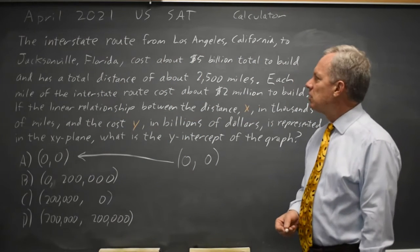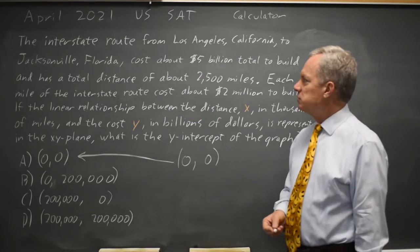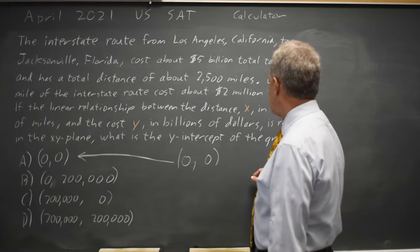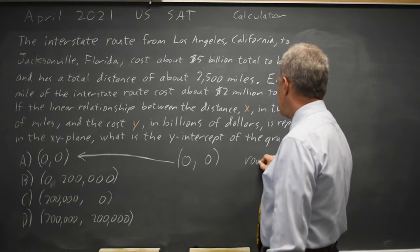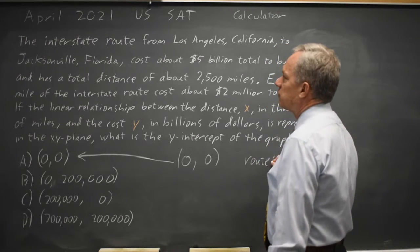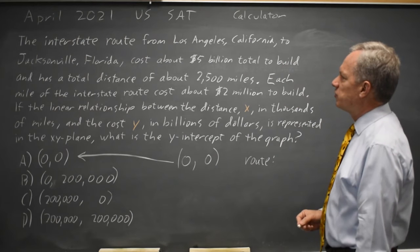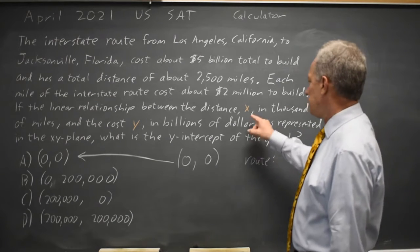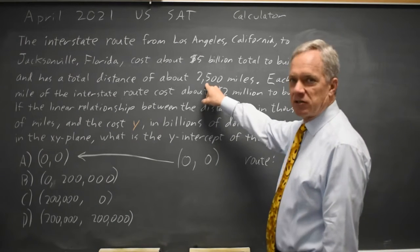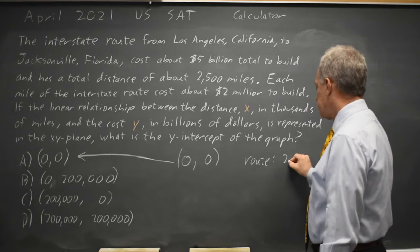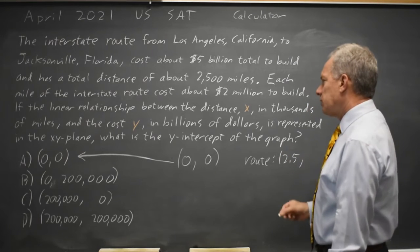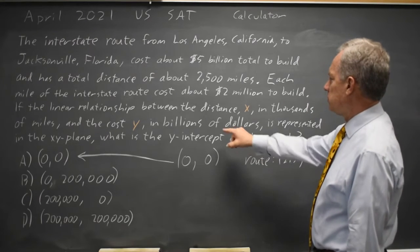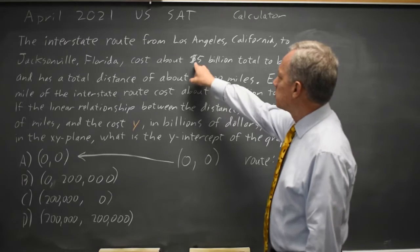If we wanted the coordinates of the entire route, the entire interstate from Los Angeles to Jacksonville, the x-value in thousands of miles for 2,500 miles is 2.5, and the y-value in billions of dollars, we're told it's 5.